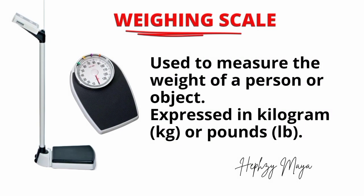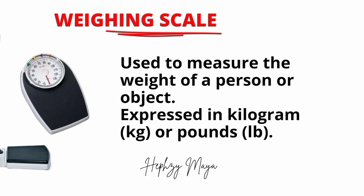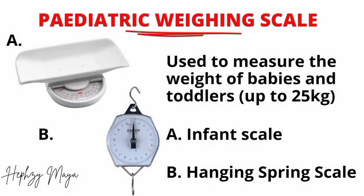Weighing scale. It's used to measure the weight of a person or object. It's expressed in kilograms (kg) or pounds (lb). Pediatric weighing scale: it's used to measure the weight of babies and toddlers, up to 25 kg. A is the infant scale and B is the hanging spring scale.